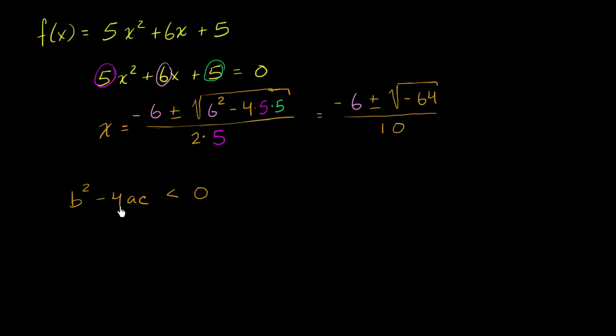So if the discriminant is less than 0, we're going to take the square root of a negative number, resulting in an imaginary number. And so what that gives us are not two real roots, but two non-real complex roots.